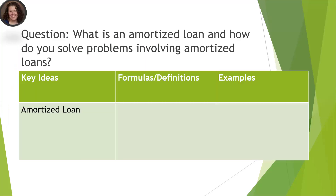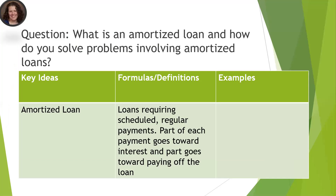So first, what is an amortized loan? The basic idea is you've got a loan where you have to make payments on a regular basis. These payments are going to be split — part of the payment every month is going to go towards paying the interest, and part of the monthly payment is going to go towards paying off the principal, or the amount that you borrowed. An example of this would be a car loan or a home loan, which is also called a mortgage.